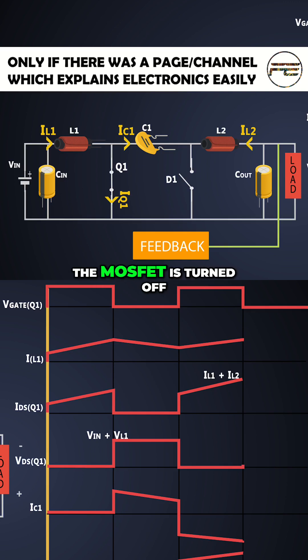In the fourth cycle, the MOSFET is turned off. The current across the inductor starts decreasing and it charges the capacitor, and there is no current flowing through the MOSFET.